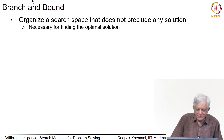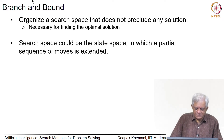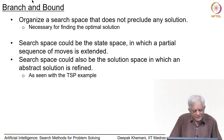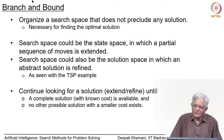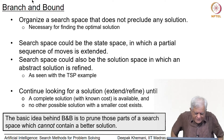Since we want to guarantee the optimal solution, we want to work in a search space that will not preclude any solution, so that wherever the optimal solution is, we are going to find it. It could be the state space in which a partial sequence of moves is extended, or it could be the solution space in which an abstract solution is refined, as we saw with the TSP example. The basic idea is that you continue looking for a solution, extend or refine it, until a complete solution with known cost is available and it is the cheapest — meaning no other possible solution with a smaller cost exists.